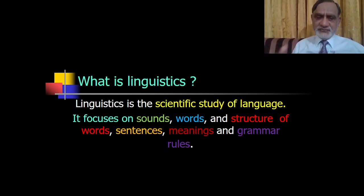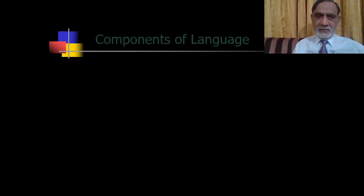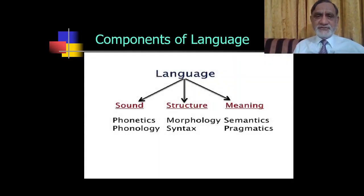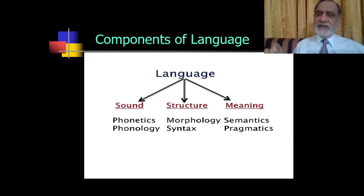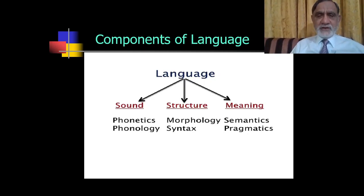Linguistics focuses on the sounds of the language, words and structures of the language, sentences, meaning and grammar rules. The components of language are organized under three main sectors: sound, structure, and meaning. Under sound we have phonetics and phonology; under structure we have morphology and syntax; and under meaning we have semantics and pragmatics. In the last video we discussed phonetics and phonology. Today we are going to take up morphology.